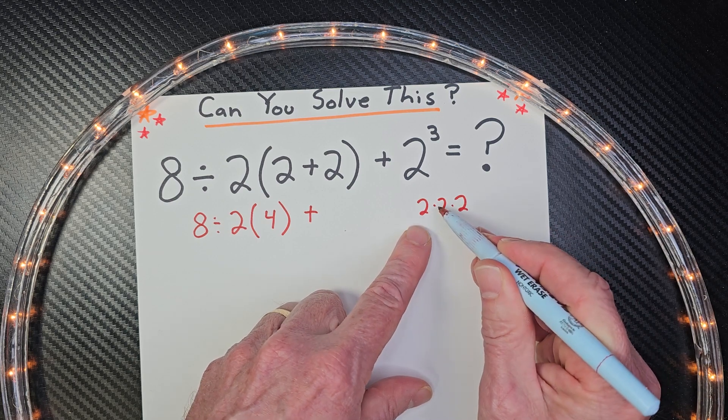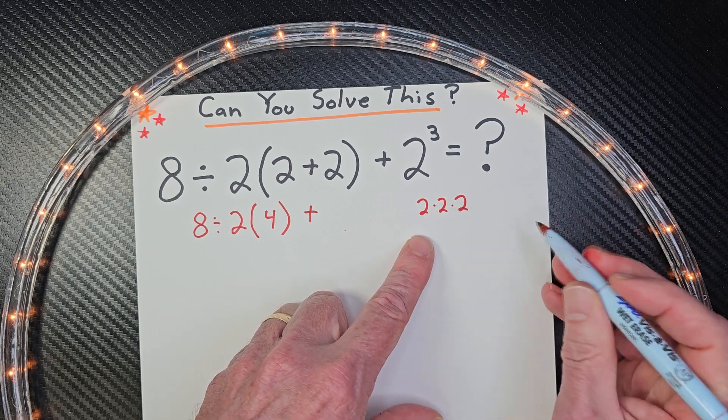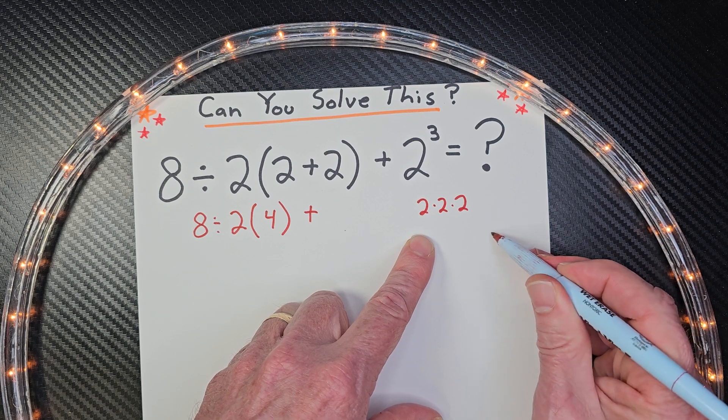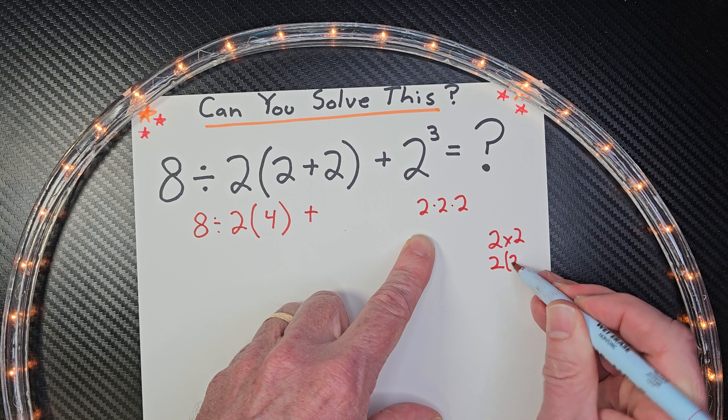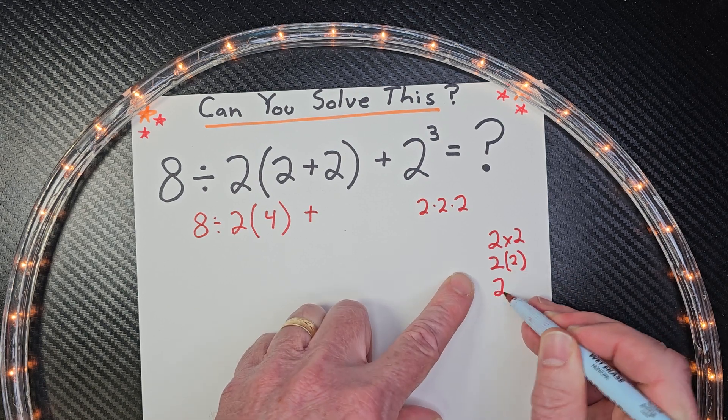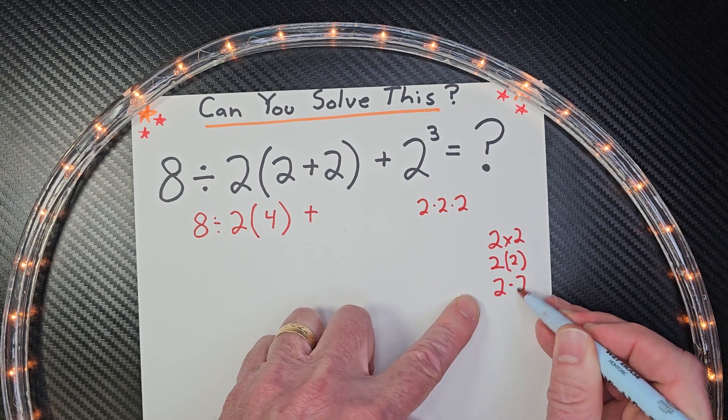Now, if you're not familiar what this little dot is, that is multiplication. And with multiplication, you can go 2 times 2, or 2 times 2 with parentheses, or 2 with a little dot there, and 2.